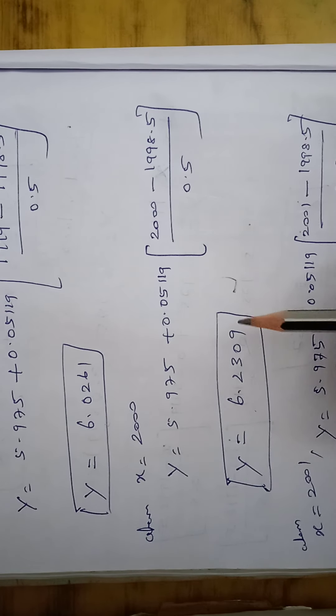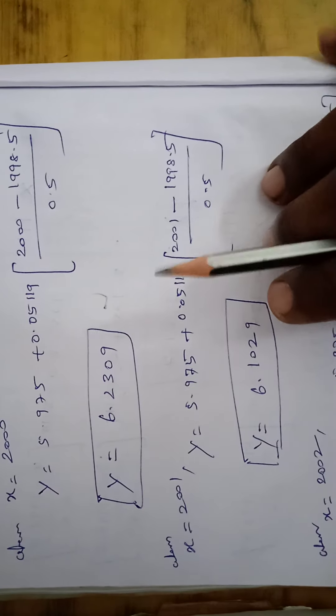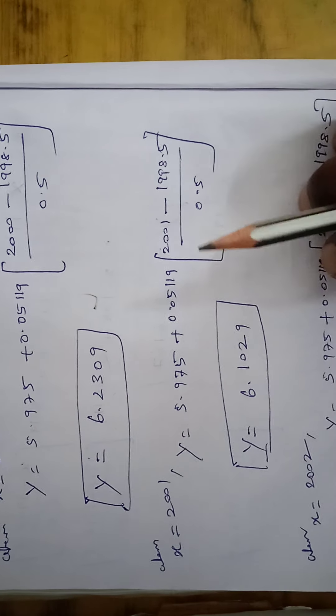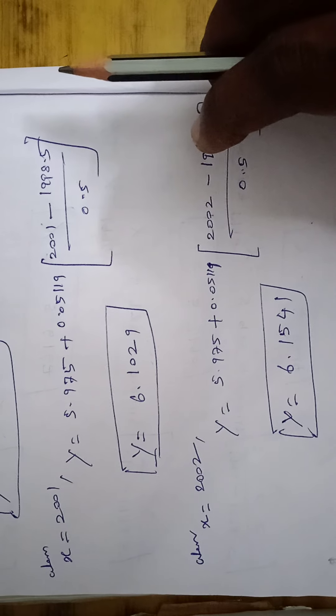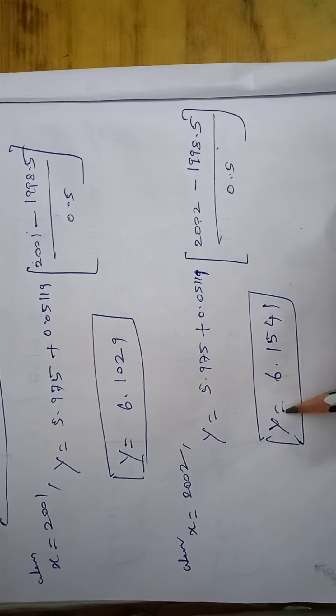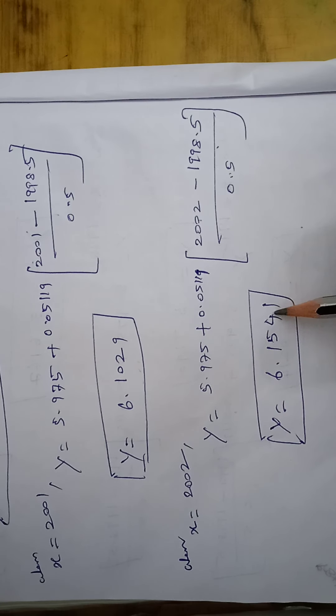In the year 2001, answer is Y equal to 6.1029. In the year 2002, Y equal to 6.1541. These are all the trend values of the corresponding years.